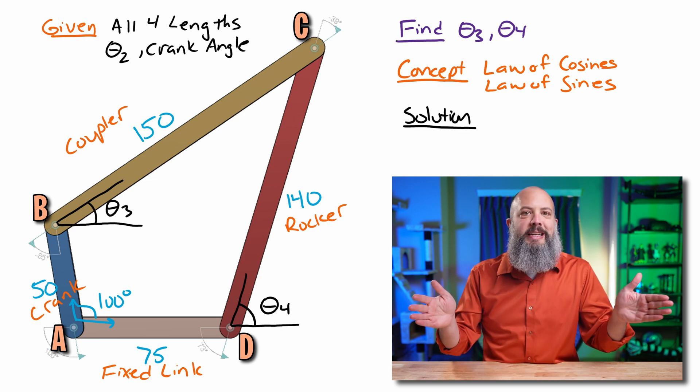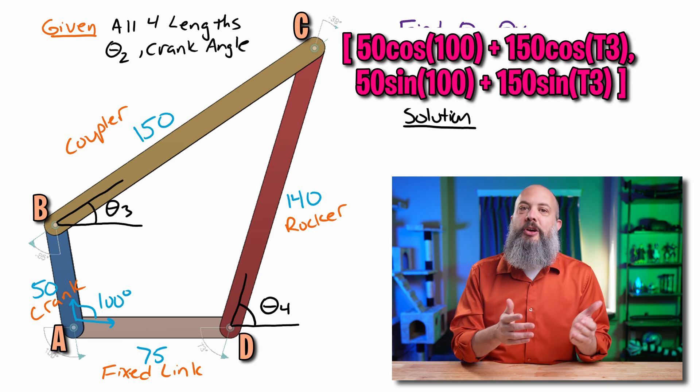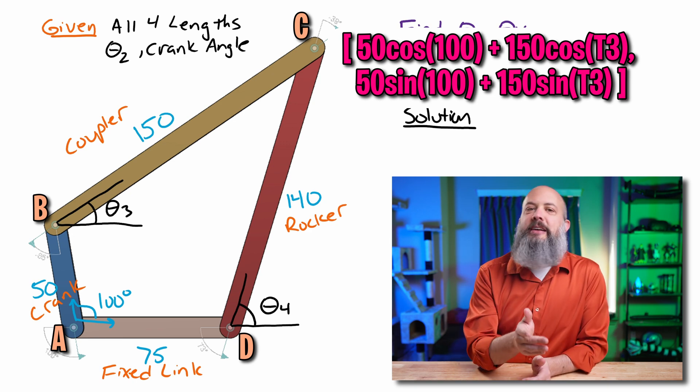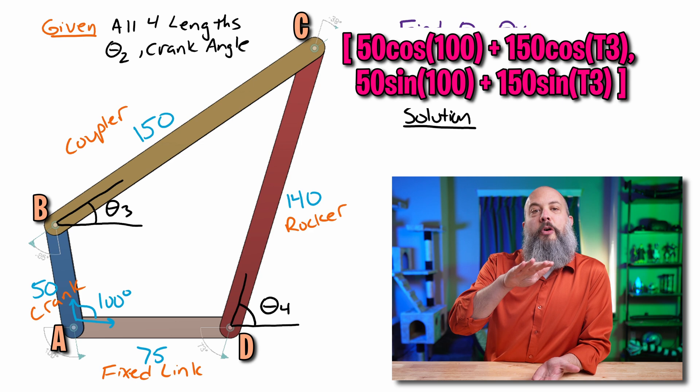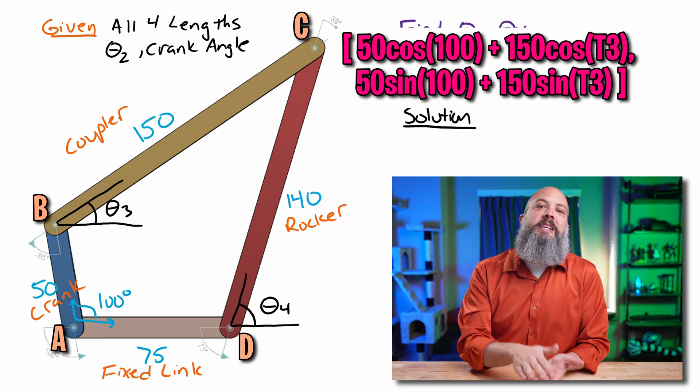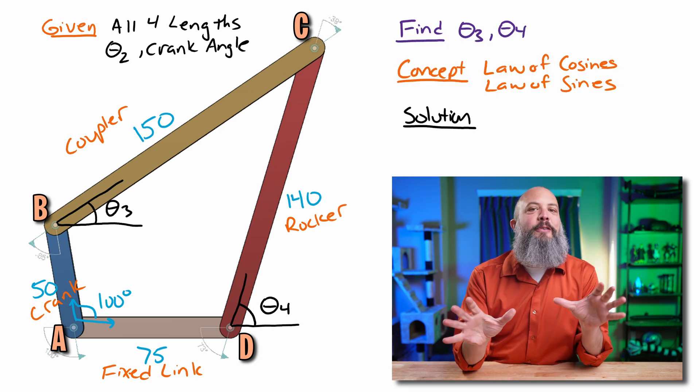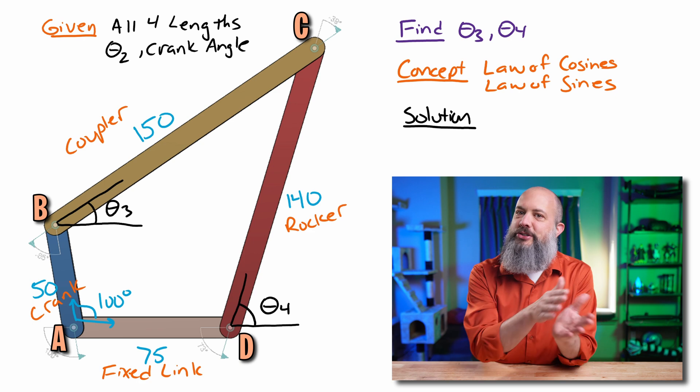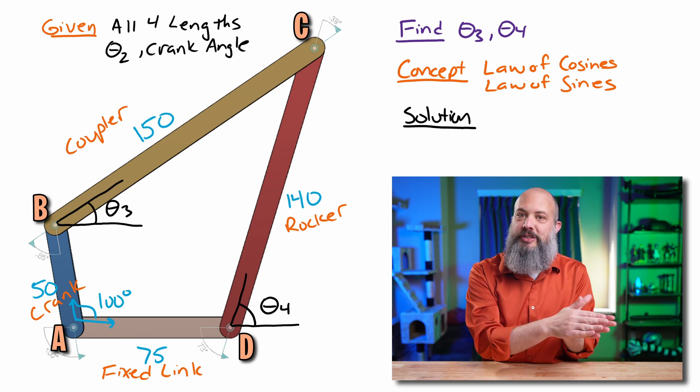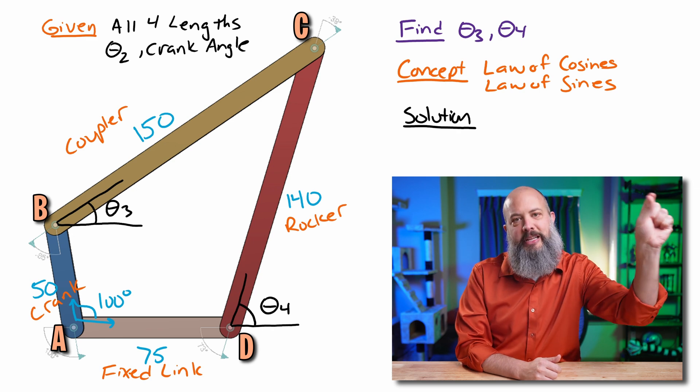That point, its x-coordinate is going to be 50 cosine 100 plus 150 cosine theta 3. Its y-coordinate will be 50 sine 100 plus 150 sine theta 3. And that's the point of finding theta 3 and theta 4 is you can use these angles measured to the positive x-axis with sine and cosine to find the position of the points at the end of each link.